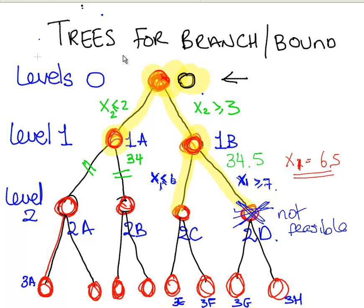We found that 2D is not feasible, so we are not going down its subtree anymore. 2C was feasible, so we are going to have a quick look at these two nodes at the bottom.